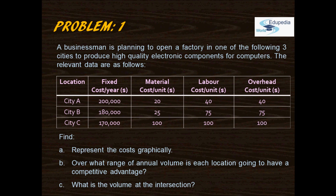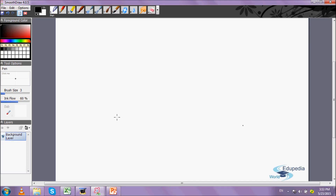The first problem was that a businessman is planning to open a factory in one of three cities: A, B, and C. The fixed and variable costs of those are given. We need to draw the graph, find the range in which each of these locations will have the competitive advantage, and finally the volume at all three intersections.